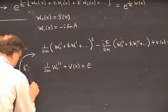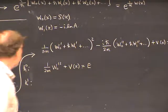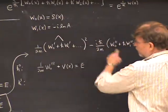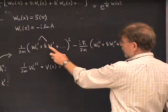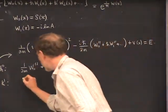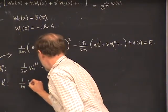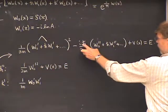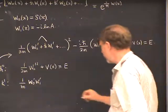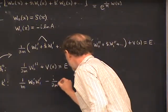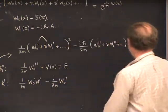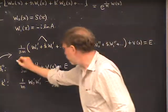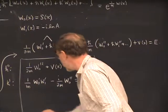At first order in h-bar, there's a cross term from squaring the series: (1/m)·w₀′·w₁′, plus a contribution from the w₀ double-prime term: −(i/2m)·w₀″. The sum equals zero. This is the beginning of a hierarchy of equations — the first is an equation for w₀ alone, and once solved, you plug it into the second equation to get an effective equation for w₁, and so on.